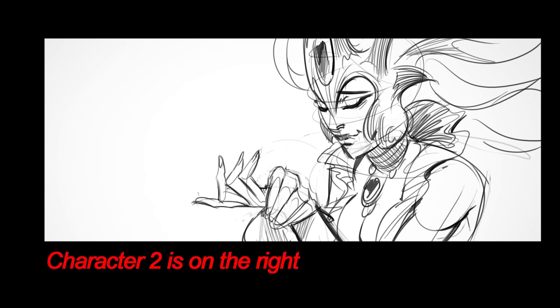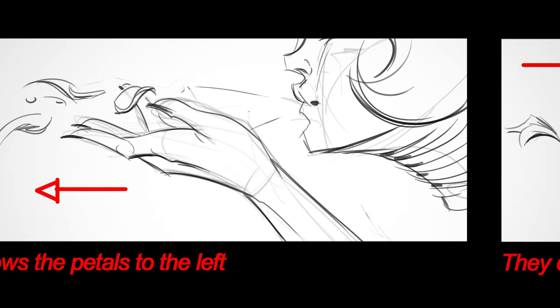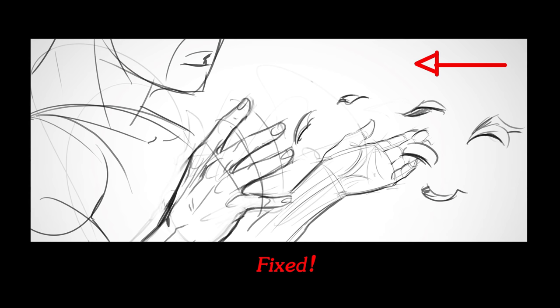But continuity can also be broken by other things than physical objects like an eyeline or a direction or the position of characters. When things move in one direction they should stay moving in that direction unless we physically see them turn. And when characters are speaking to each other they should remain in the same position to not confuse the audience.